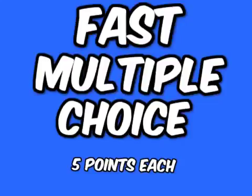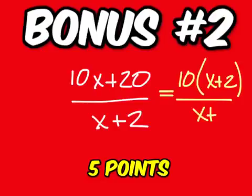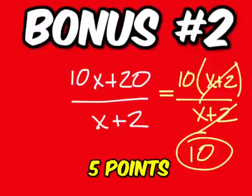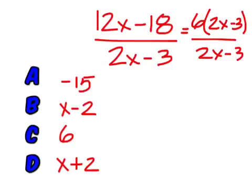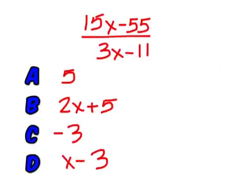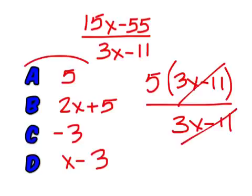Block letter only. Here's another one. On the bonus problem, you can factor out a 10 on the top and be left with x plus 2. You have an x plus 2 on the bottom, so those cancel out. The answer is 10. On the top up here, you can factor out a 6 and be left with 2x minus 3, which cancels with the bottom. So the answer is 10. For this one, you can factor out a 5 on the top and be left with 3x minus 11, which cancels with the bottom. So the answer is A.